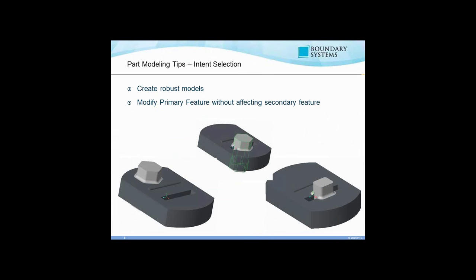Using intent selection allows you to create secondary features using intent edge or surface selection. The benefit is you can create very robust models that are resistant to change — you can modify the underlying primary feature without affecting secondary features. Primary features are things like extrudes and revolves that stand alone; secondary features like rounds, chamfers, and drafts depend on another feature to exist. If you use intent edge selection, you can modify the underlying extrude and not affect the rounds that go off of it.